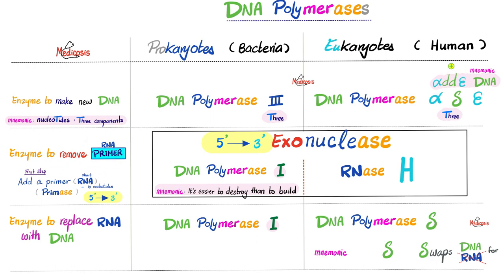If you want to remove the RNA primer, in prokaryotes DNA polymerase 1 will do it; in eukaryotes it's RNase H. To remove RNA primers you need to be an exonuclease from 5' to 3'. In bacteria, DNA polymerase 1 is this exonuclease; in eukaryotes, RNase H represents it. Mnemonic: it's easier to destroy than to build — to destroy RNA primers you use one, but to build you need more numbers, so DNA polymerase 3. Next, if you want to replace those RNA pieces with DNA pieces in prokaryotes, it's the same enzyme, DNA polymerase 1; but in eukaryotes it's DNA polymerase delta. Mnemonic: DNA polymerase delta swaps DNA for RNA — and that's why the answer about prokaryotes is DNA polymerase 1.